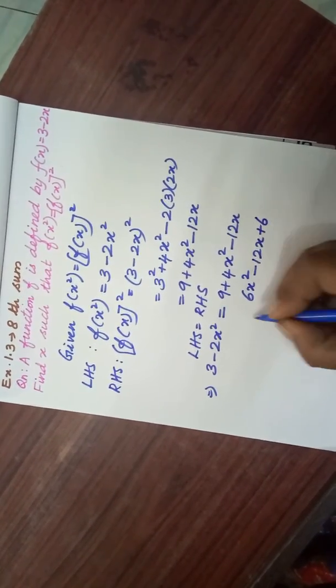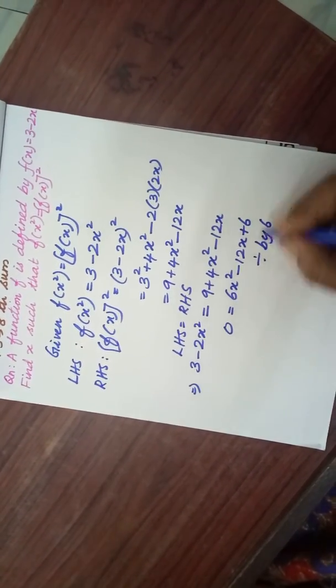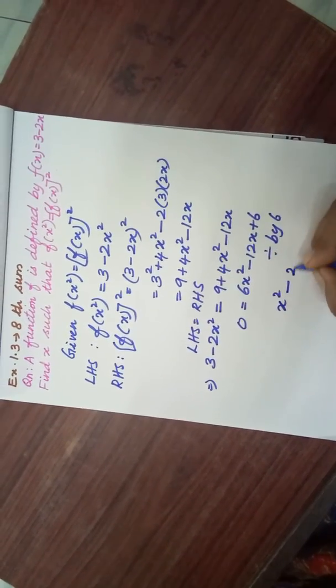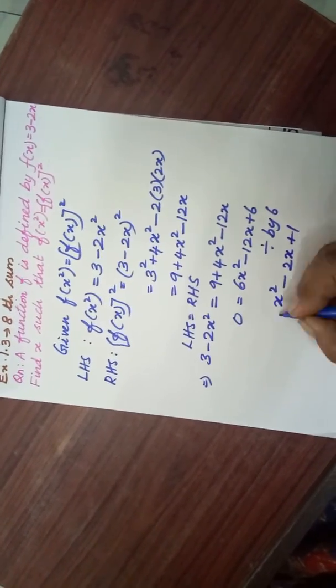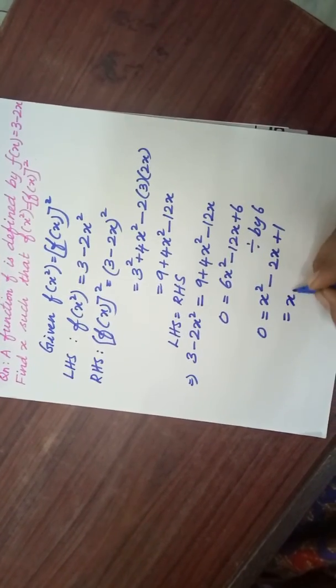Divide by 6 both sides. So you get x² - 2x + 1 = 0. You can factorize as (x - 1)(x - 1) = 0.